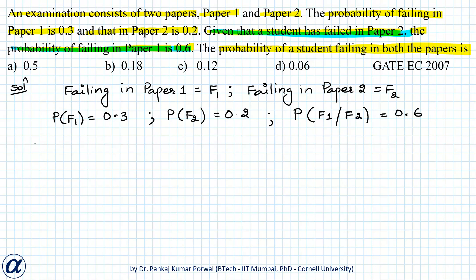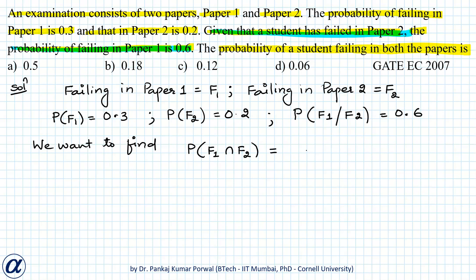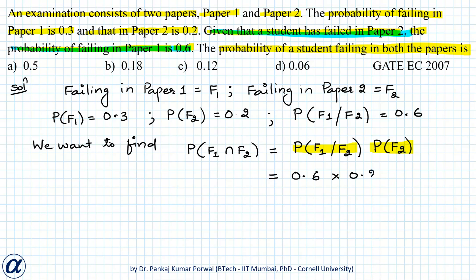We want to find the probability of a student failing in both papers, that is the probability of F1 intersection F2. Using conditional probability, I can write this as the probability of failing in paper 1 given the student has failed in paper 2, multiplied by the probability of failing in paper 2. Both probabilities are given in the question, so that is 0.6 into 0.2, which gives 0.12.